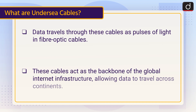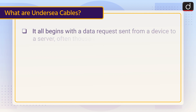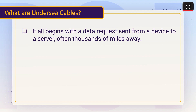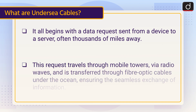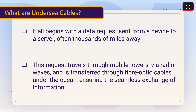These cables act as the backbone of the global internet infrastructure, allowing data to travel across continents. It all begins with a data request sent from a device to a server, often thousands of miles away. This request travels through mobile towers via radio waves and is transferred through fibre optic cables under the ocean, ensuring the seamless exchange of information.